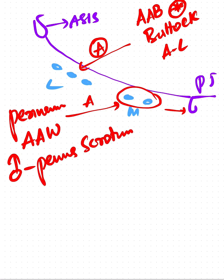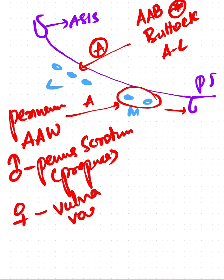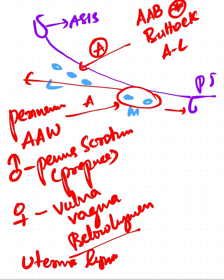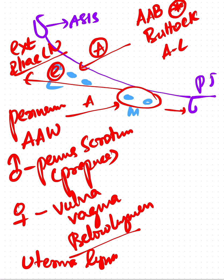In males it also includes the scrotum, and in females it includes the vulva, vagina below the hymen, and uterine lymphatics. These afferents will go mostly into the external iliac lymph nodes, with very few going into the deep inguinal lymph nodes.